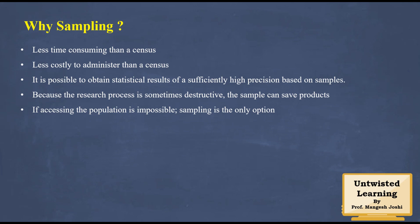Why sampling? First, it is less time-consuming than measuring data related to the entire population. It is less costly to administer. It is possible to obtain statistical results of sufficiently high precision based on the sample. Because the research process is sometimes destructive, the sample can save products — if you are doing non-destructive testing, you cannot disrupt the entire population, so by testing on a sampling basis you can save sufficient products. Also, if accessing the population is impossible, you can use sampling.